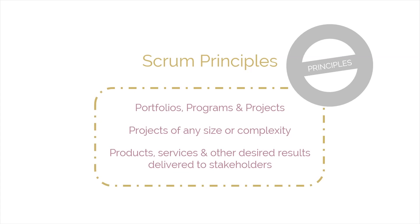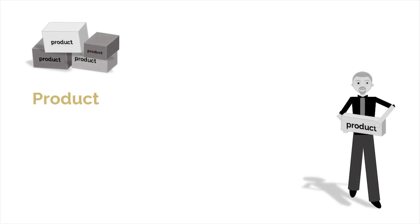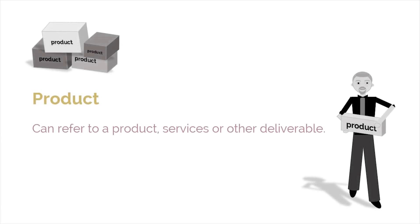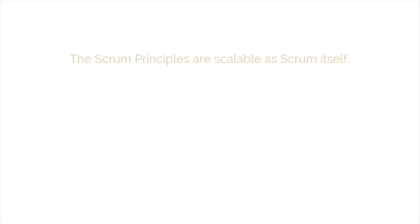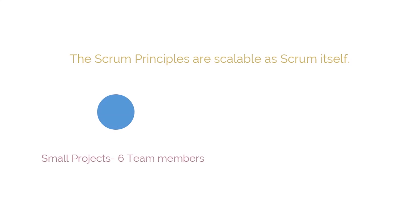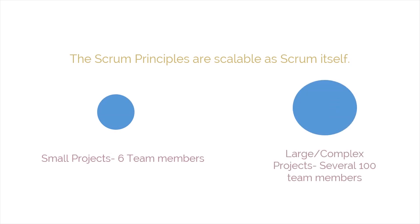In applying these principles, it's helpful to remember how the SBOK guide defines the term product. The term product can refer to a product, service, or other deliverable. The Scrum principles are as scalable as Scrum itself. The scalability of Scrum is that it can be applied effectively to any project in any industry, be it small projects with teams of six members or large, complex projects with up to several hundred team members.